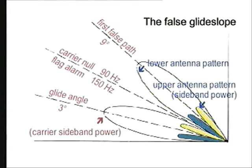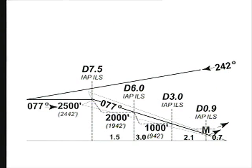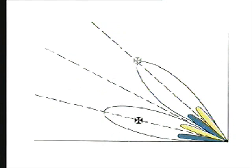The false glide slope and the false localiser are by-products of the normal ILS transmission. For example, the glide slope signal is transmitted with additional lobes above the primary 3-degree lobe — the first one has a 9-degree glide path. If this false glide slope was captured, you would have no flags, show on slope, and have a normal ident, but you would need an extreme rate of descent. The best strategy to detect a false glide slope capture is to intercept the glide slope at the initial approach fix to enable a cross-check of altitude against position.